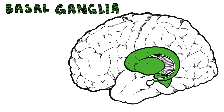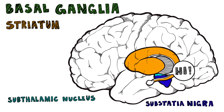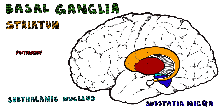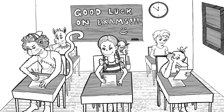The basal ganglia are a group of subcortical nuclei, like the striatum, substantia nigra, and subthalamic nucleus. The striatum includes the putamen and globus pallidus of the lentiform nucleus, as well as the caudate — as you'll remember if you are studious.